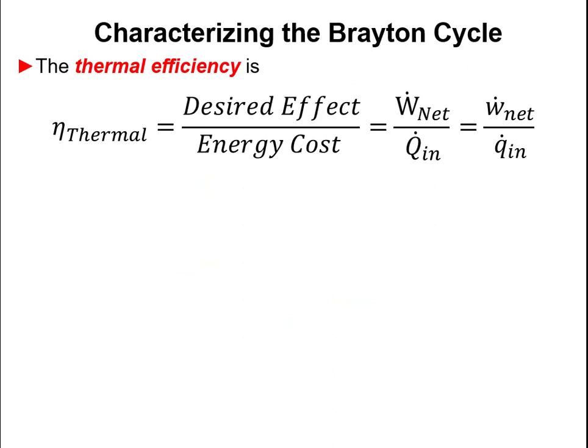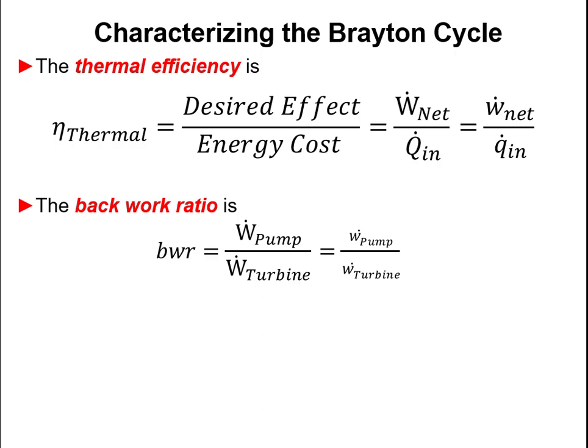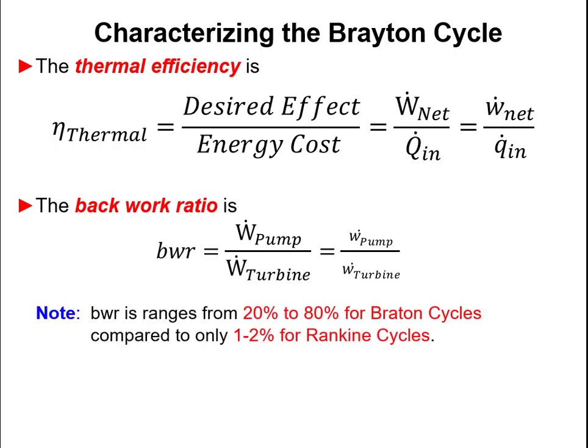When we characterize the Brayton cycle, it's a heat engine, so we'll talk about thermal efficiency — the net work or energy benefit divided by the heat in, which is the energy cost. We might also characterize a Brayton cycle by its back work ratio, remembering that the power plant is the first consumer of its own power, using some turbine output to run the compressors. Back work ratios in Brayton cycles tend to be fairly high compared to Rankine cycles, but thermal efficiencies can be even higher.